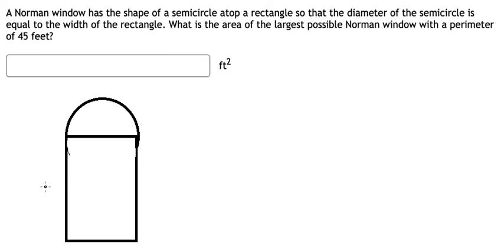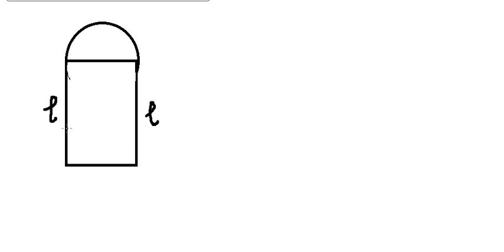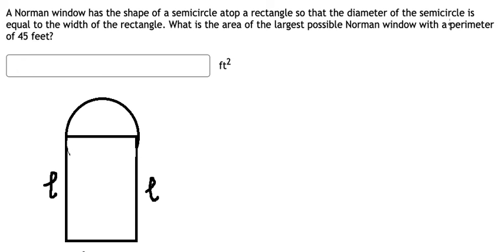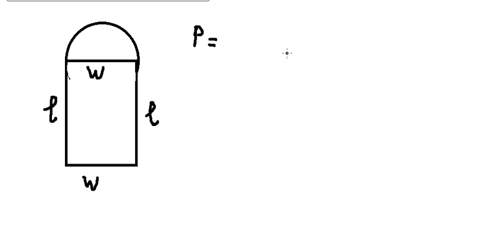I will label the length as L and the width as W. We know that the diameter of the semicircle is equal to the width of the rectangle.